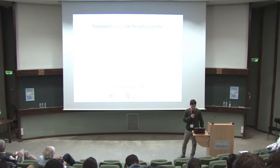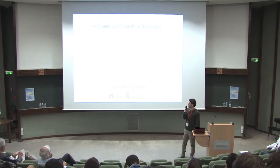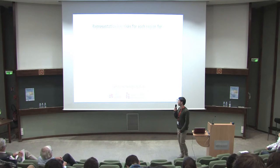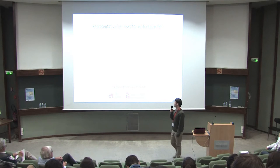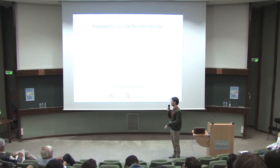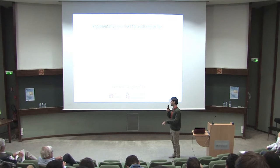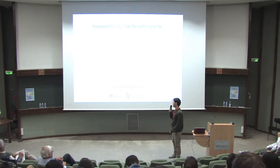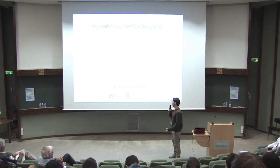Then we have the risk for biological systems — that is terrestrial ecosystem, marine ecosystem, and wildfire. And then the last systems, which are the most related with human activities: food production, livelihoods, health, and economics.